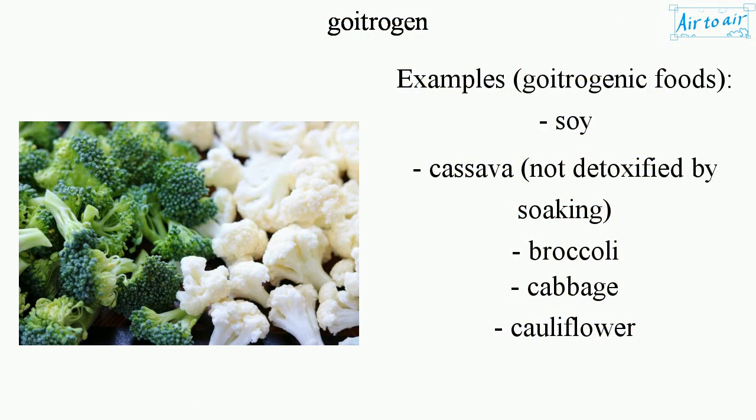Examples of goitrogenic foods include: Soy, Cassava (not detoxified by soaking), Broccoli, Cabbage, and Cauliflower.